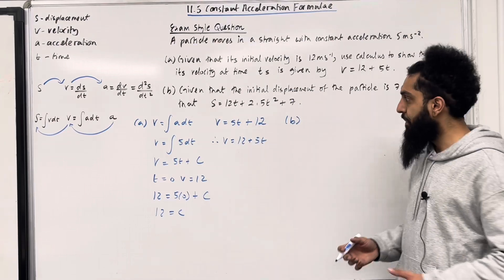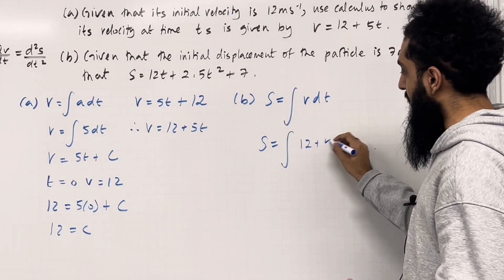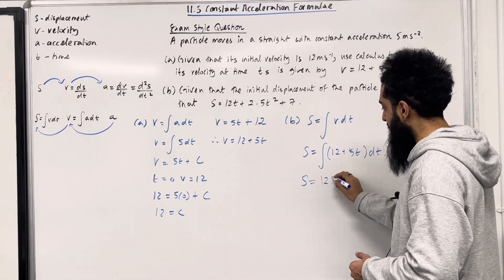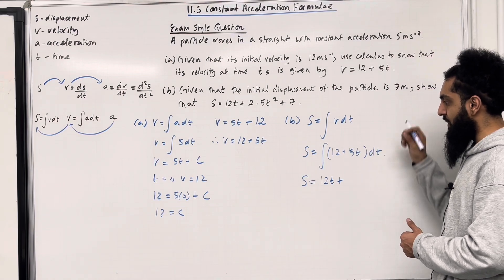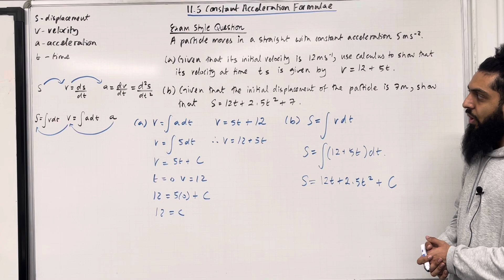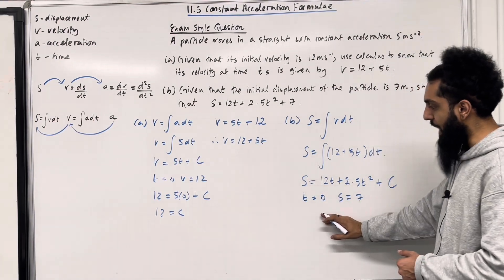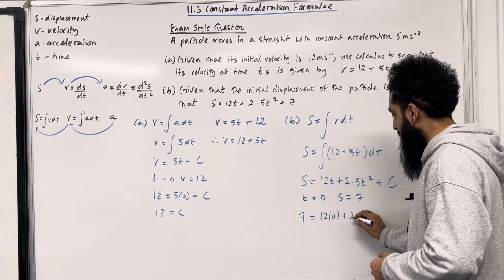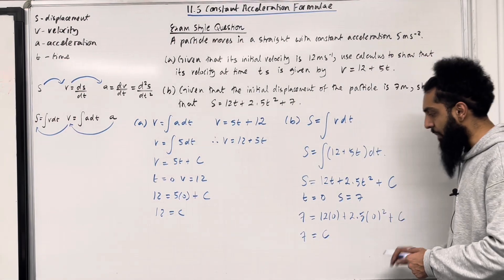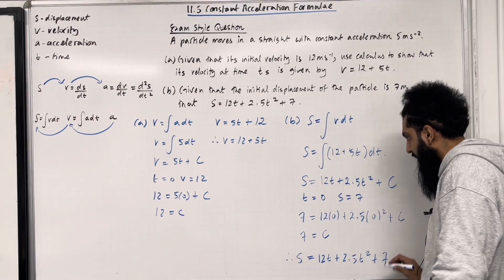To find the displacement, we have to integrate the velocity. So S is equal to the integral of (12 + 5t) with respect to t. Using term-by-term integration, the first term integrates to 12t and the second term integrates to 5t² over 2. 5 divided by 2 is 2.5, so we get 2.5t² + c. The initial displacement is 7 meters, so when t = 0, S = 7. Substituting the boundary conditions: 7 = 12(0) + 2.5(0)² + c, so c = 7. Therefore, S = 12t + 2.5t² + 7, as required.